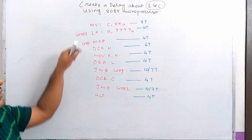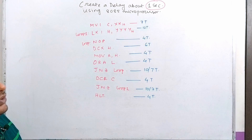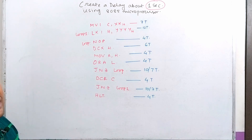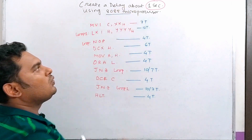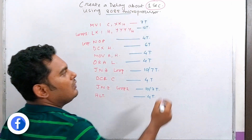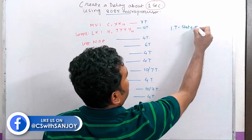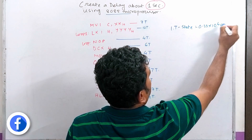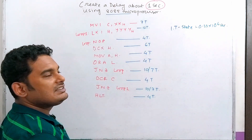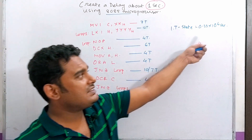If we want to calculate a 1-second delay, we use the 8085 processor clock. One T-state duration equals 0.33 × 10⁻⁶ seconds. So 1 second equals 1 divided by (0.33 × 10⁻⁶), which gives us the total number of T-states required.